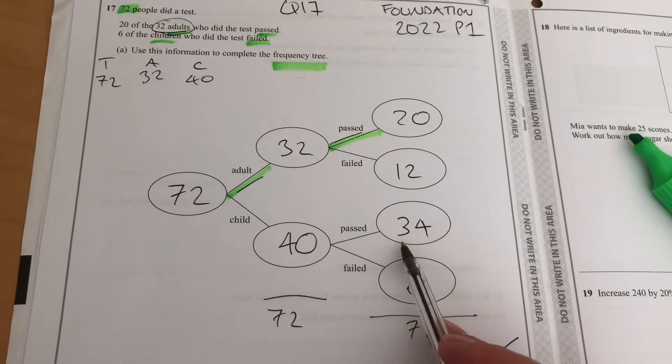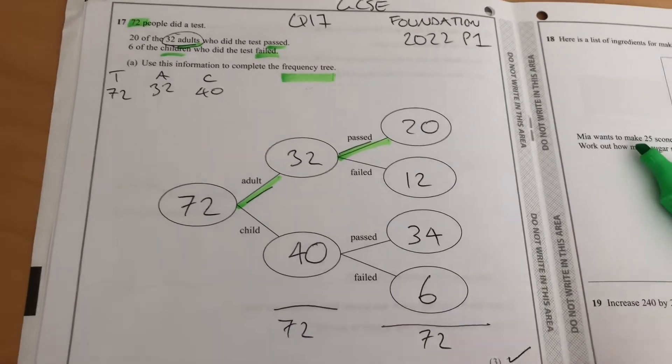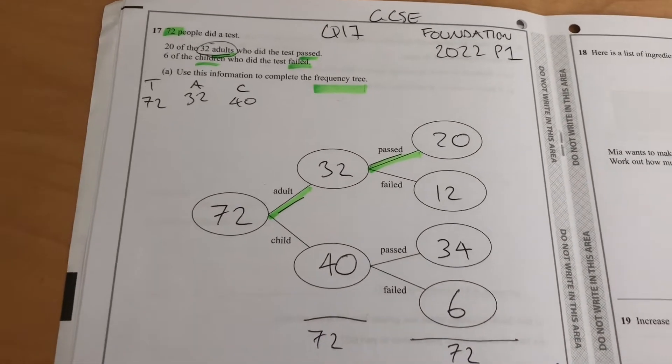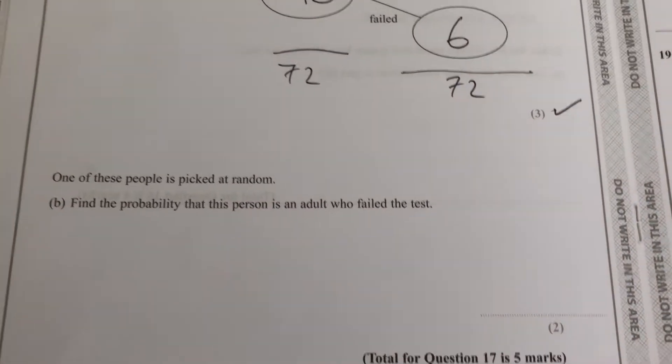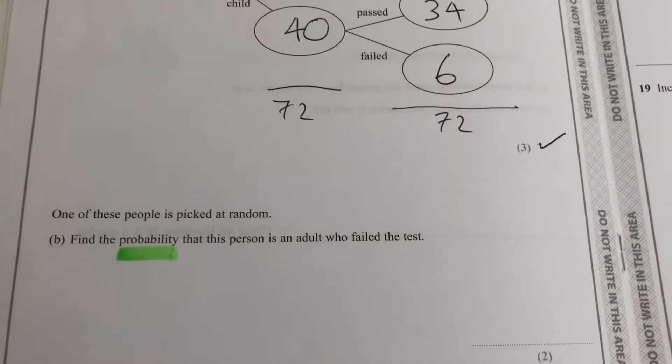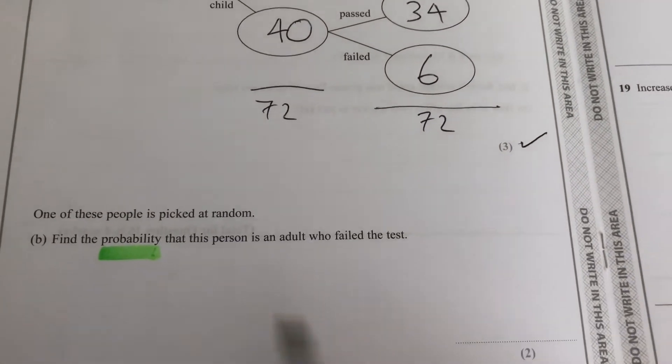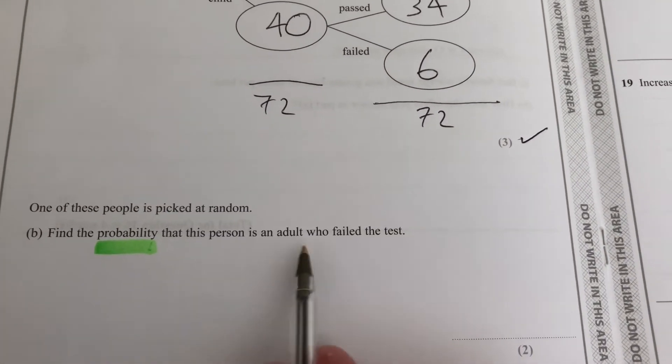Good pass rate for the kids—maybe it's something about children's TV shows. Right, that's three marks. We now have to turn this into a probability question. One of these people is picked at random. Find the probability that this person is an adult who failed the test.